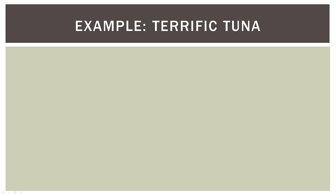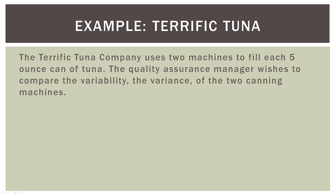So as always, I like to begin with an example — the example of the Terrific Tuna Company. The Terrific Tuna Company uses two machines to fill each five-ounce can of tuna. The Quality Assurance Manager wishes to compare the variability or the variance of the two canning machines. So what we're testing here is whether the variance of machine one is the same as the variance of machine two — are they operating at the same variance level?